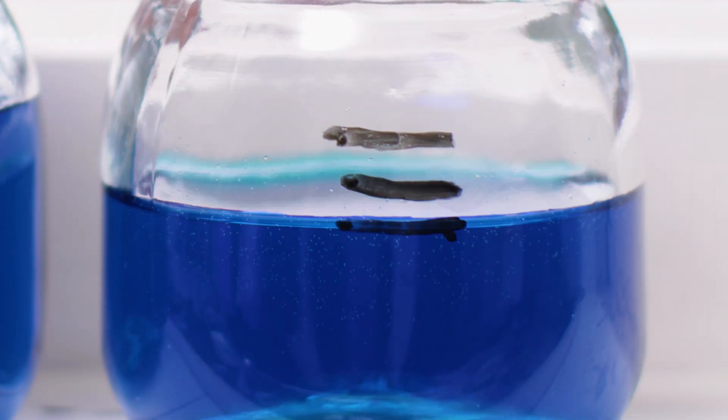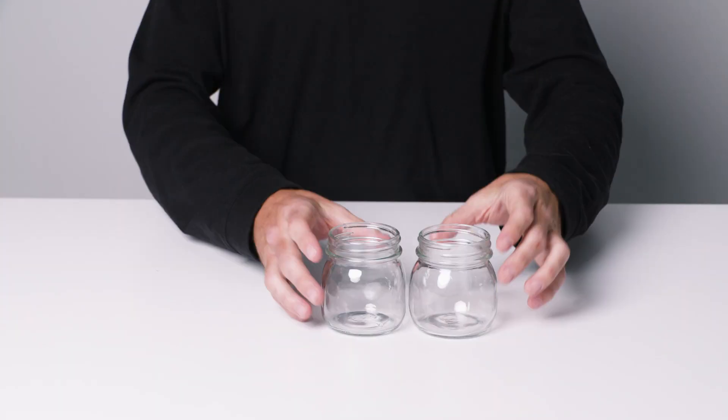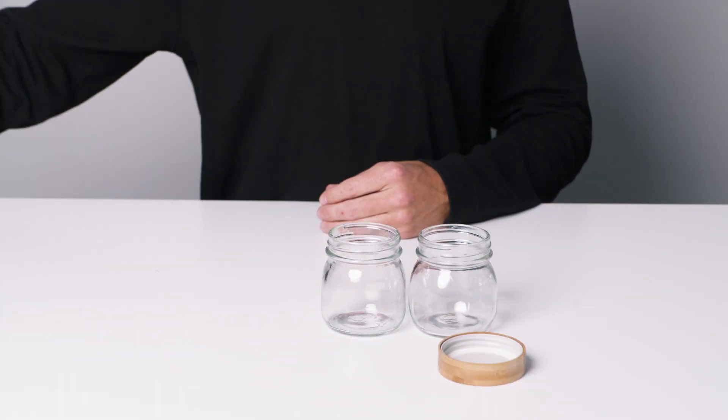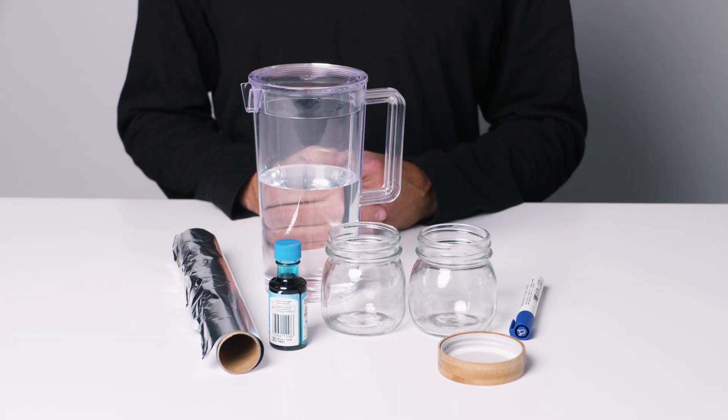Let's do an experiment taking a closer look at evaporation. For this you'll need two glass jars, one lid or aluminium foil, a marker, blue food colouring and some water. And remember,